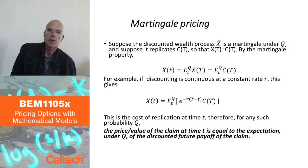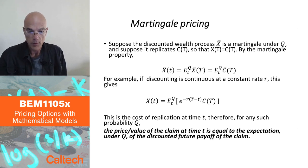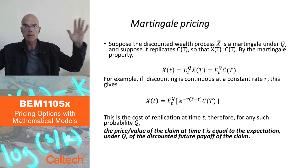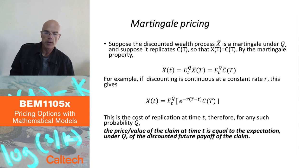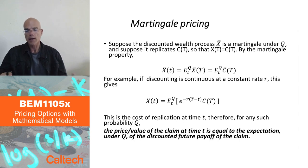Why is it that pricing random payoffs in financial markets is different from pricing them in insurance? So why in this formula here do we have Q probability, which is this artificial risk-neutral probability, rather than actual probability P that we believe in?